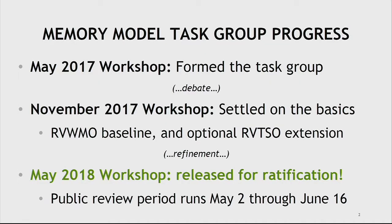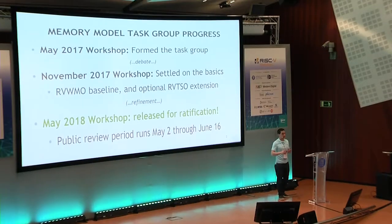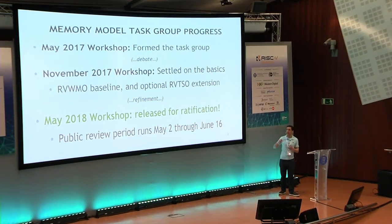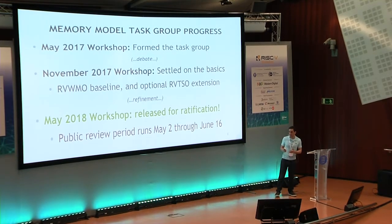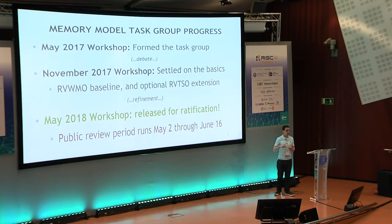A brief recap for those who might have been around at some of the earlier workshops. Maybe a year or so ago, there were people in the community — industry, academia — working together to realize that while the original memory model in the spec from earlier than 2017 had nothing fundamentally wrong with it, there were some important subtle details that were maybe not quite there yet, in order to catch up with the theory and practice of how memory models are understood and some of the other popular ISAs, and tooling to understand where exactly you need to insert fences. Also just to make sure that RISC-V can be properly compatible with C++, Java, Linux, and all of the other important software that's obviously going to be key to making the RISC-V ecosystem work properly.